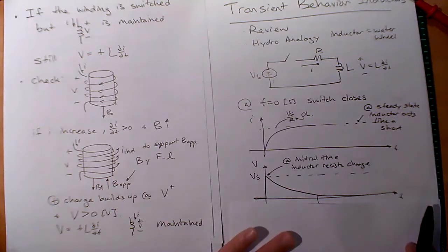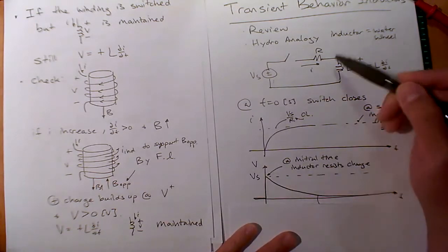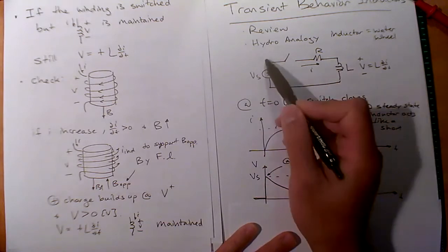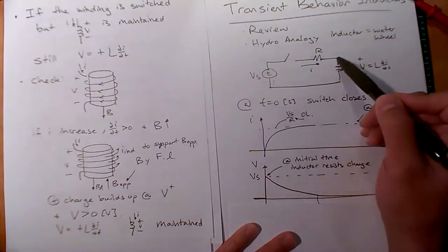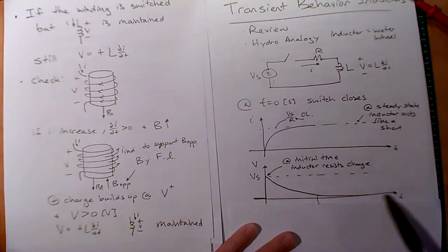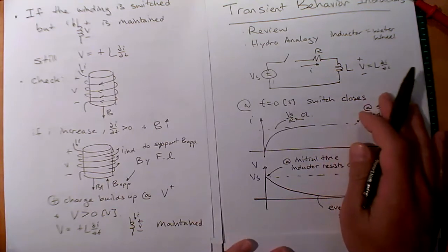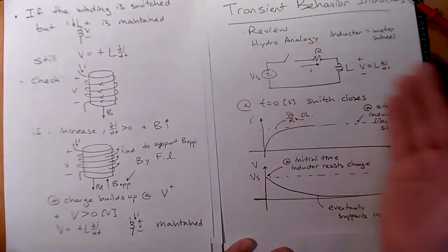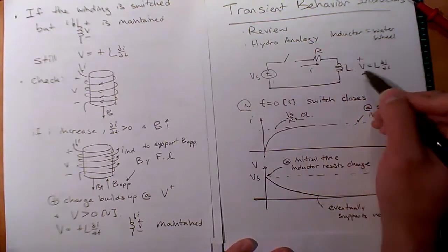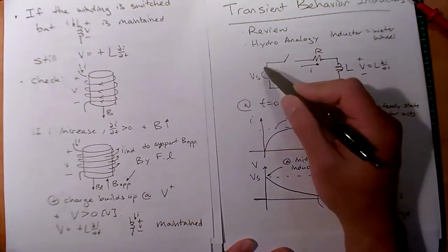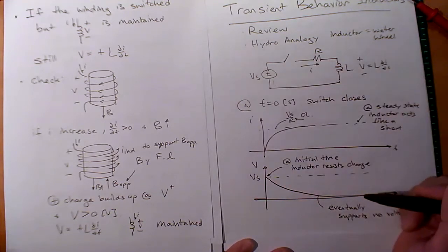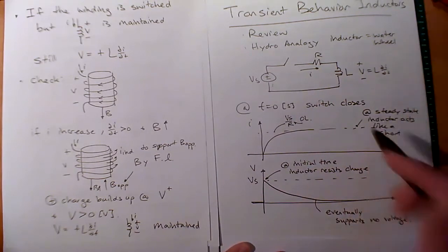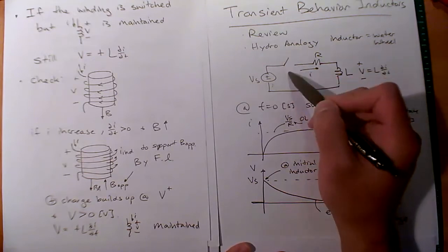The voltage spikes up and says, 'No, I do not want to change this current.' Just after closing the switch you have no current, then it releases — the voltage droops down toward zero, and the current comes up. Eventually the inductor behaves like a short, and the current reaches Vs/R. The voltage jumps immediately then falls off to zero. This is a review of all those transient first-order differential equations. You could crunch V = L·dI/dt with IR and Vs using KVL, solve the first-order ODE, or put it into a simulator to see what happens.